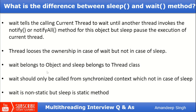Additionally, wait() belongs to the Object class — it is defined in our parent Object class — whereas sleep() belongs to the Thread class only. wait() should only be called from a synchronized context, which is not required for sleep(). Also, wait() is a non-static method but sleep() is a static method.